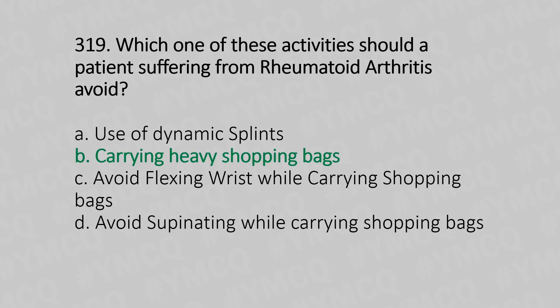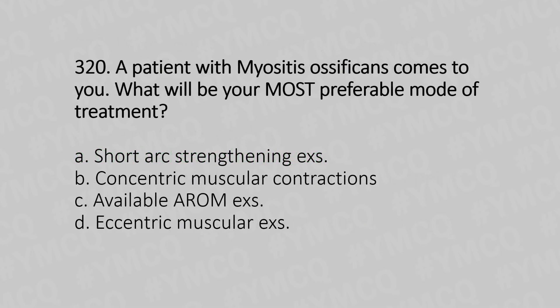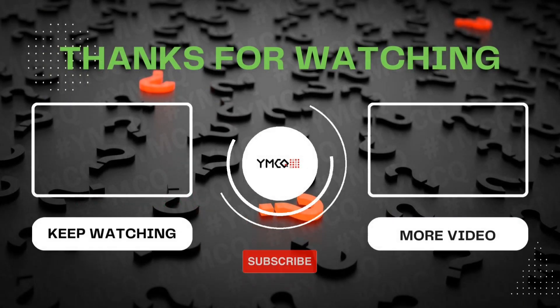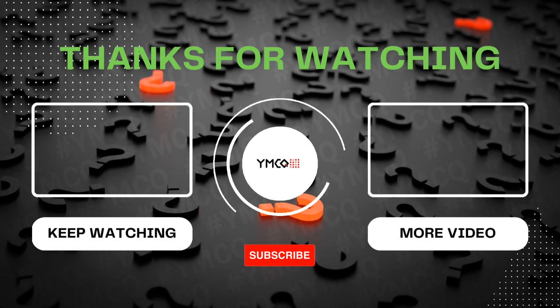Question 320: A patient with myositis ossificans comes to you. Which is the most preferable mode of treatment? Option A: short arc strengthening exercise. Option B: concentric muscular contraction. Option C: available active range of motion exercises. Option D: eccentric muscular exercises. The answer is Option C, available active range of motion exercises.